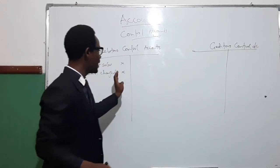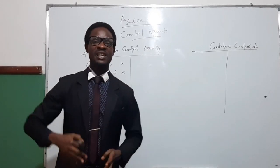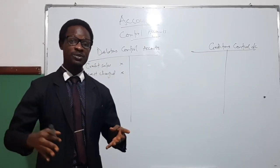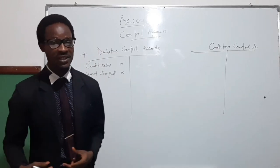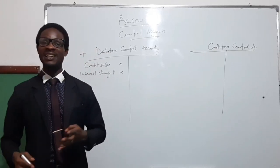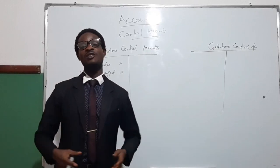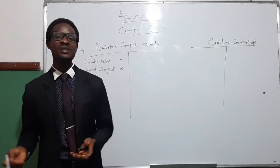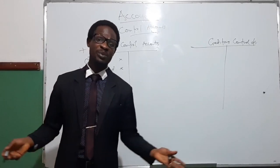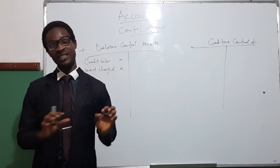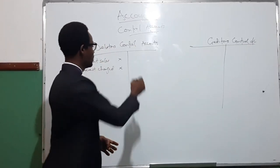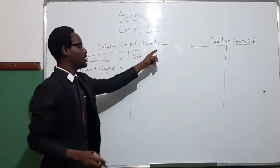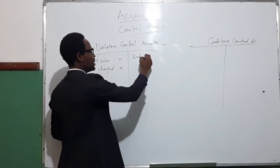For the credit side of this account, it shows the items that will reduce the value of our debtors, or reduce the amount debtors are owing the business. First of all, one of them is bad debts. Bad debt is debt that cannot be recovered again — as a result of bankruptcy or for any reason, a customer may not be able to pay you again, so the best thing to do is to write it off and take it from the present list of debtors. Bad debt will be in the credit side, because any item that reduces the value of our debtors is on the credit side.